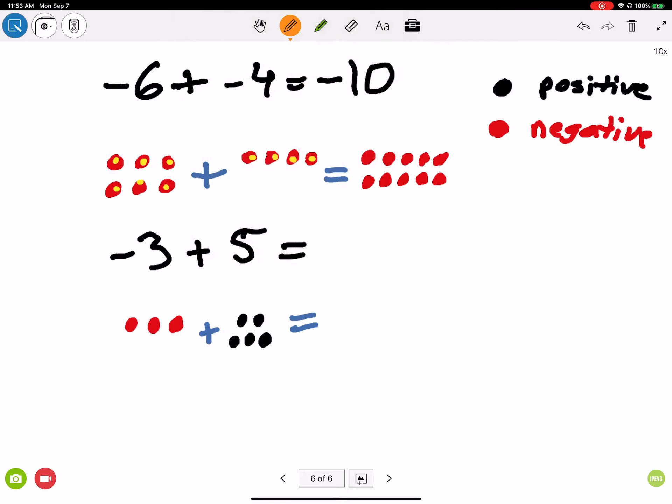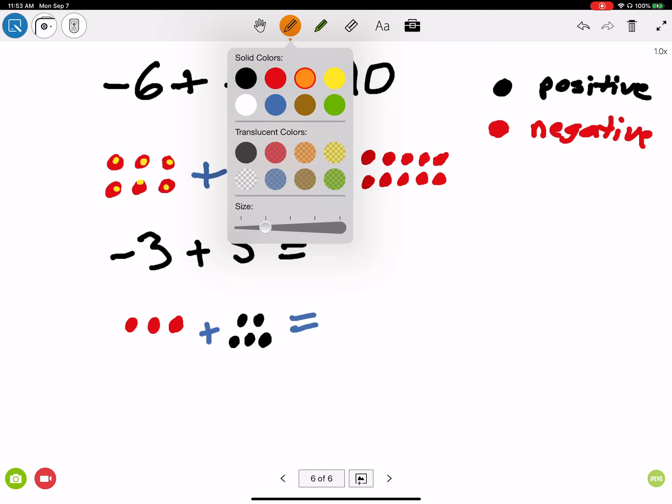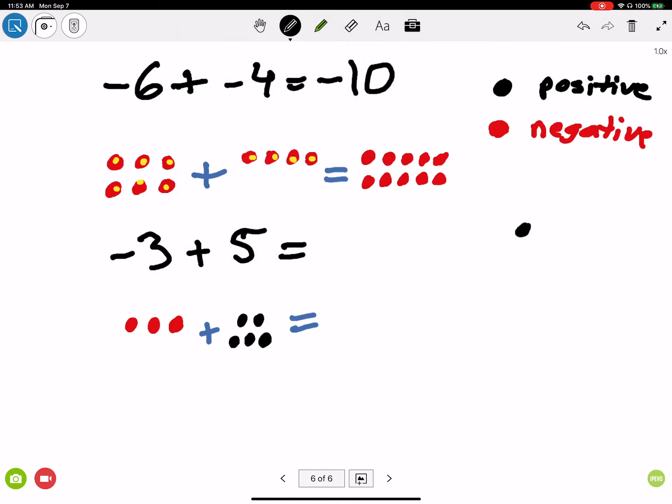So what happens when I put a red and a black together? What happens when I pair a positive and a negative together? If I pair a positive 1 and a negative 1 together, I need to understand that these cancel each other out. If I give you a point and I take away a point, you're now at 0. So these cancel each other out. Well, if I do this every time I see a red, I can cancel out a black.